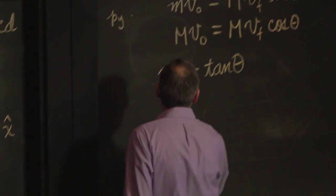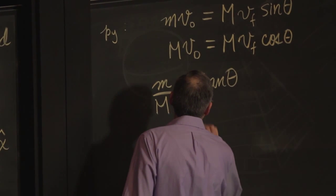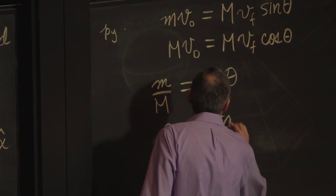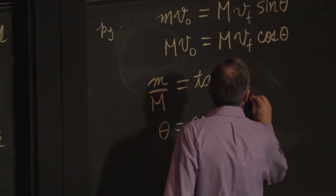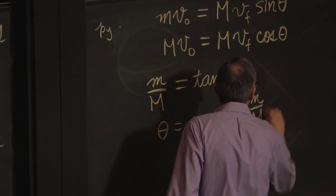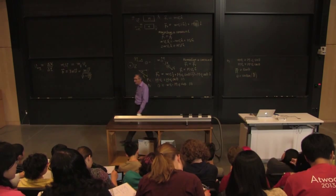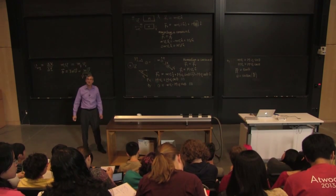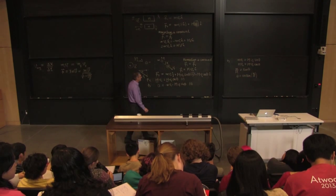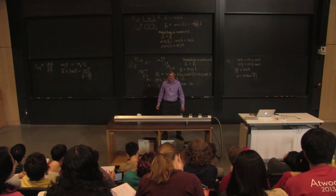So if you like, you can rewrite this theta is the arc tan of m, little m, the mass of the pin over big M, the mass of the bowling ball. That one was easy. How do I find v final?